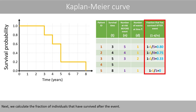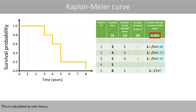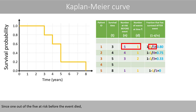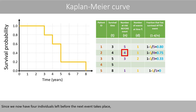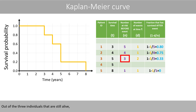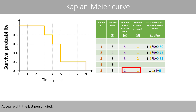Next, we calculate the fraction of individuals that have survived after the event. This is calculated as one minus the number of events d, divided by the number at risk before the event n. Since one out of five at risk before the event died, 80% survived after the event. Since we now have four individuals left before the next event, where one individual died, 75% of these four are still alive. Out of the three individuals still alive, two died, which means 33% are still alive after that event. At year eight, the last person died, so no one is alive after the last event.